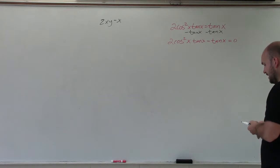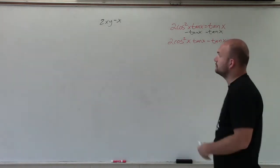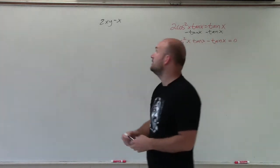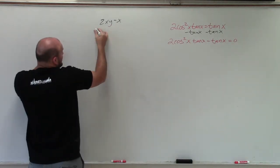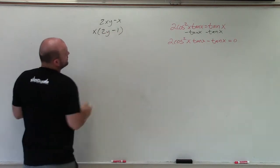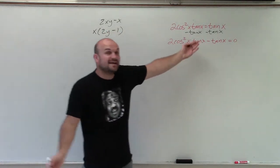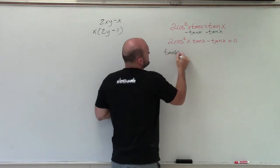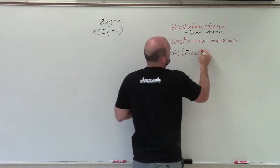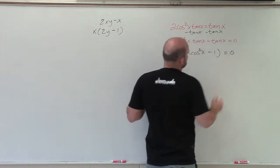So now I need to look into factoring. Just like in that equation you can factor out an x — you can't subtract them, but you can factor them — here I can factor out a tangent of x. Factoring out tangent of x leaves me with: tangent of x times (2 cosine squared of x minus 1) equals 0.